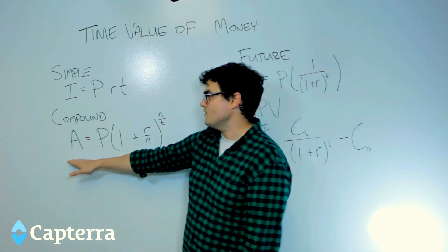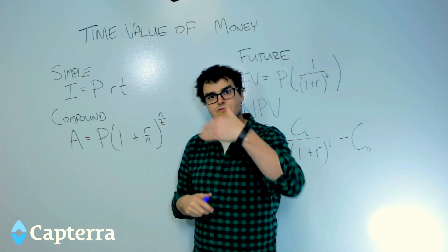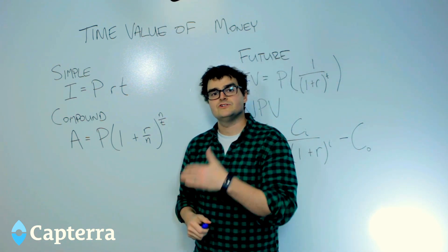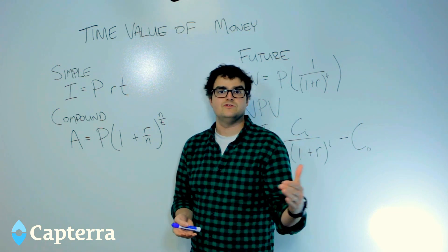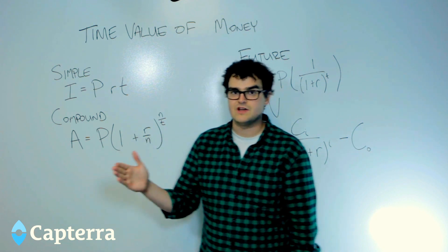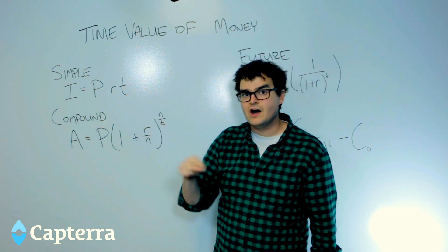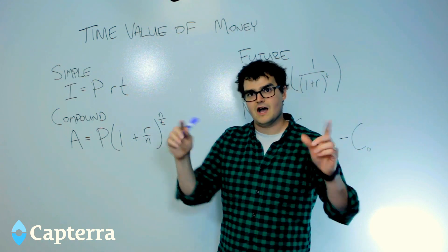What you run into a lot more commonly is compound interest. Compound interest is when I give you $100 and I say I'm going to charge you 7% over the course of two years. And what that means is that that first year, I'm going to charge you $7. But in that second year, I'm going to charge you 7% of $107.